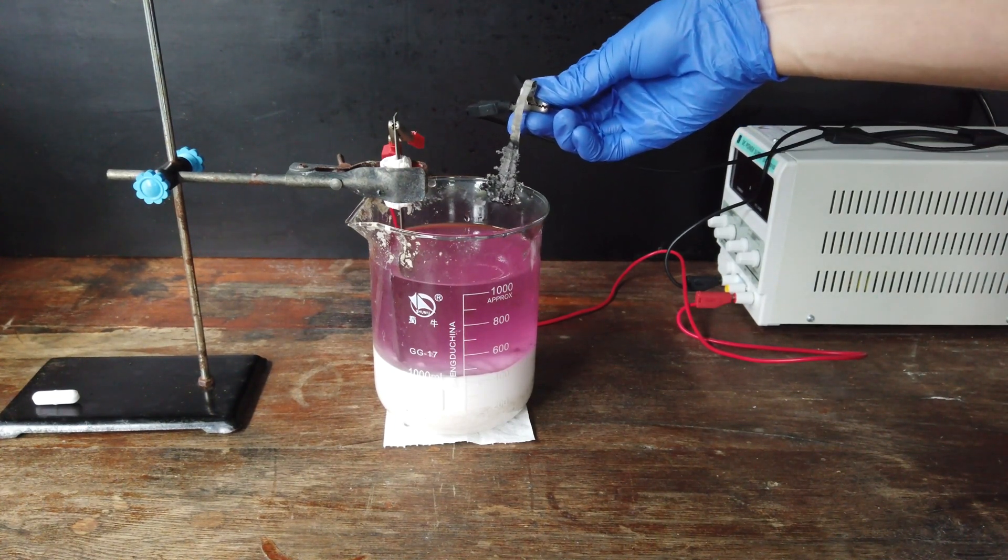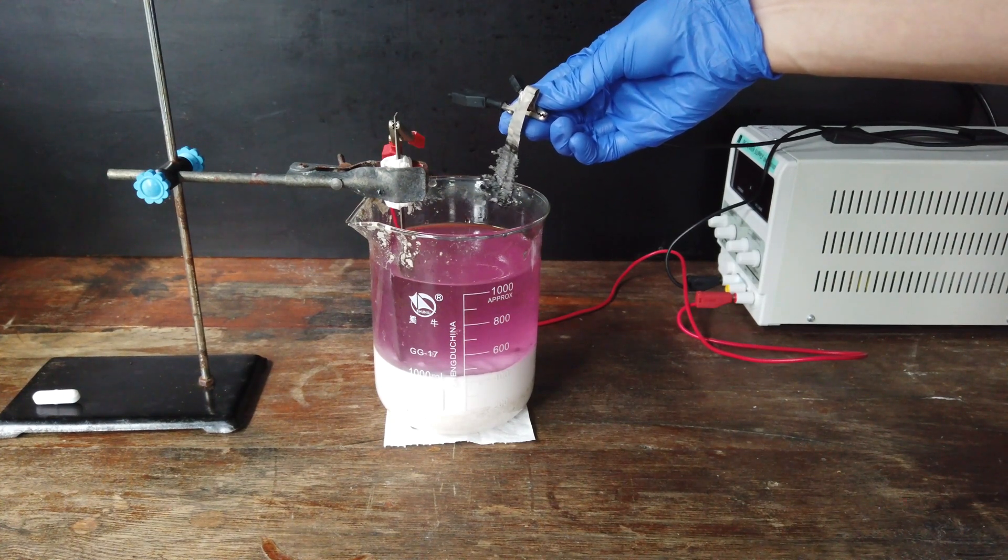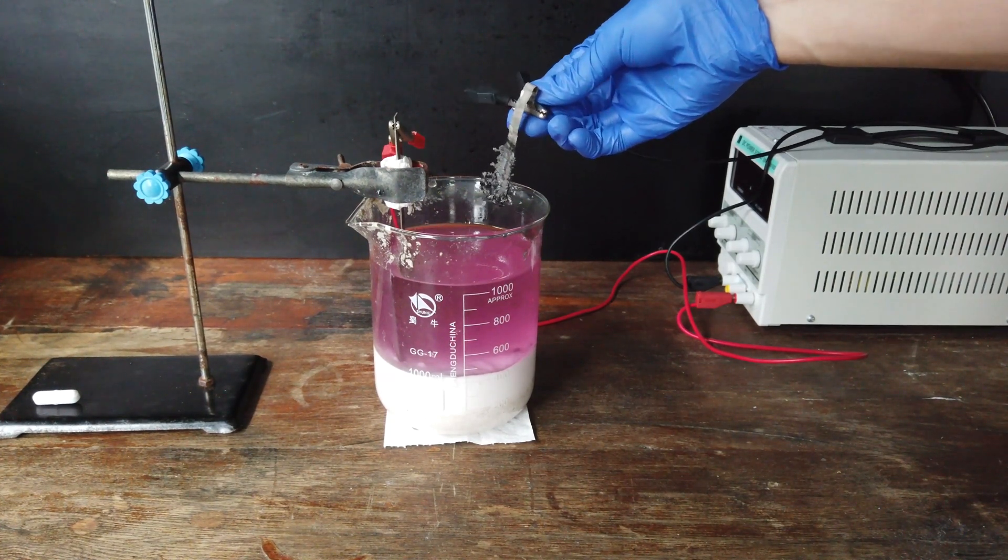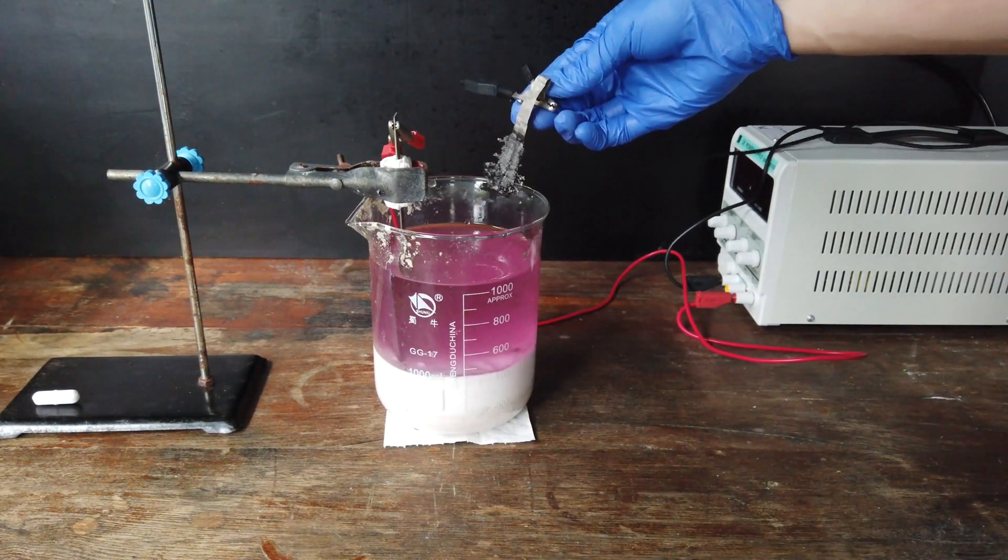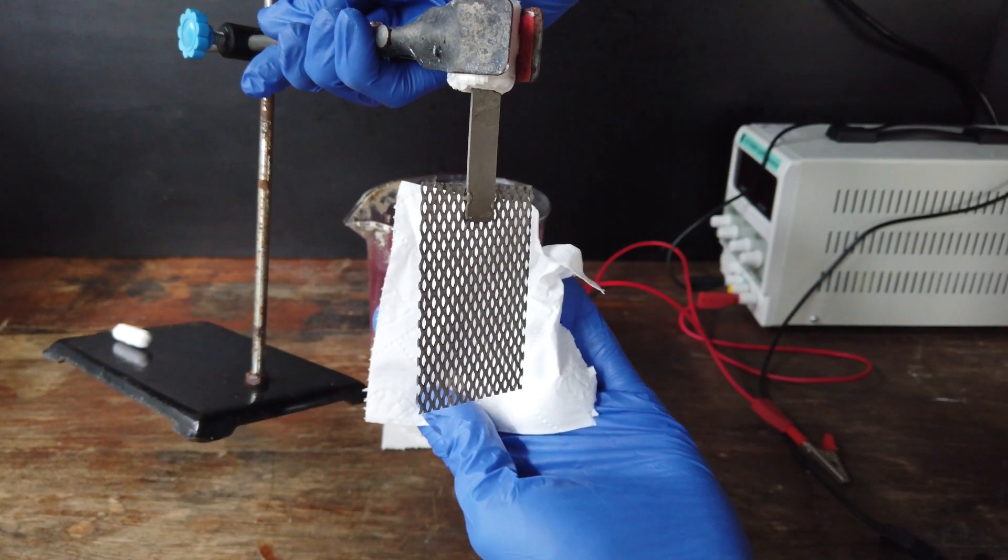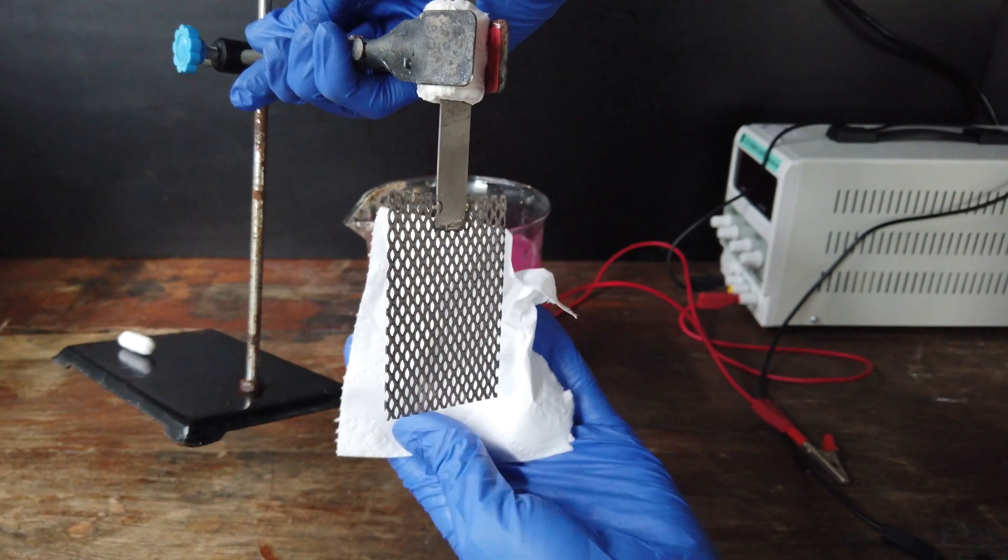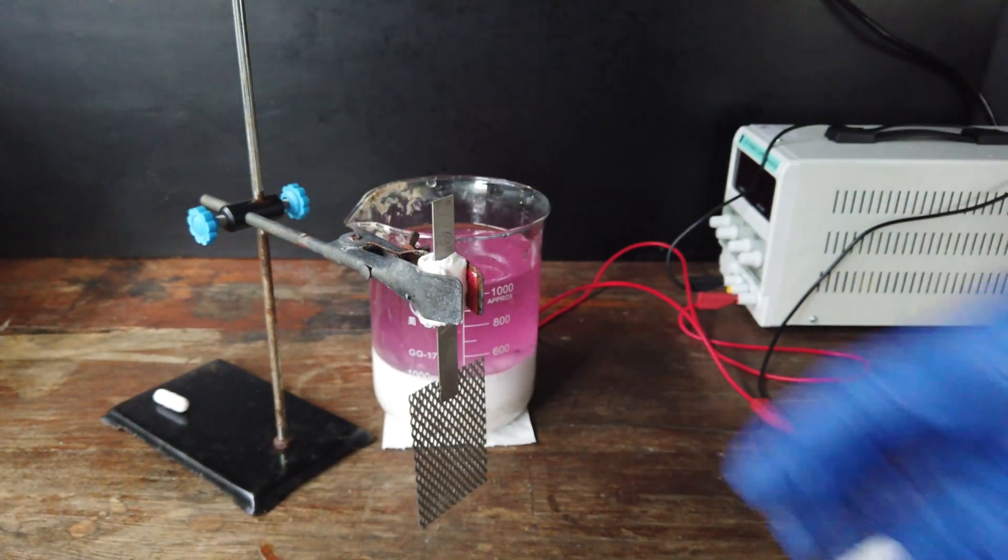Once again, we've grown trees of nickel and cobalt metal on our nickel electrode there. And I'm going to add those to our beaker full of metal that we've extracted. You can see our platinum electrode here is completely unscathed by the reaction. So, that just goes to show the inertness of the platinum electrode.